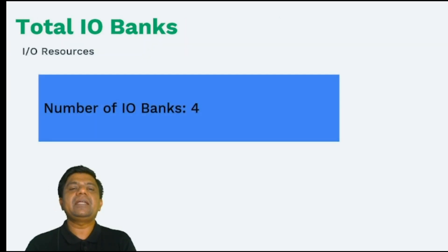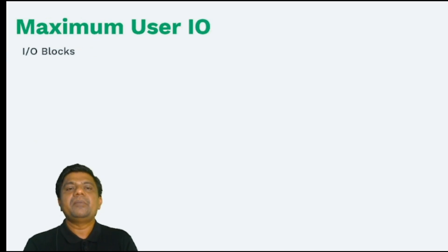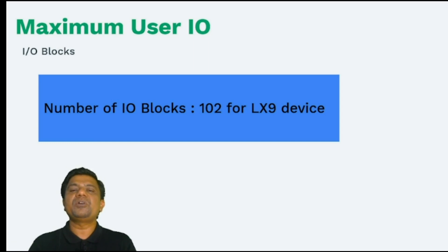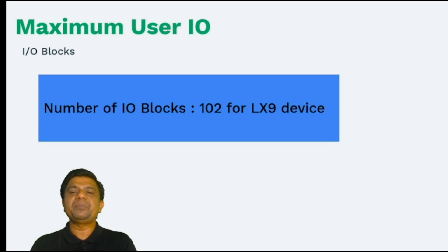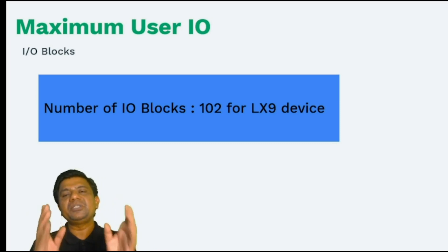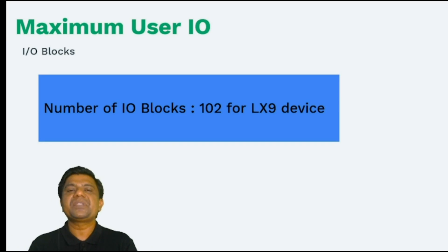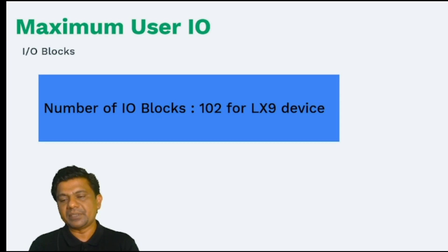This FPGA has 4 IO banks. The maximum user IOs are 102 for the LX9 device — out of 144 total IOs, only 102 are available for the user. The remaining 42 are used for dedicated operations or dedicated purposes.